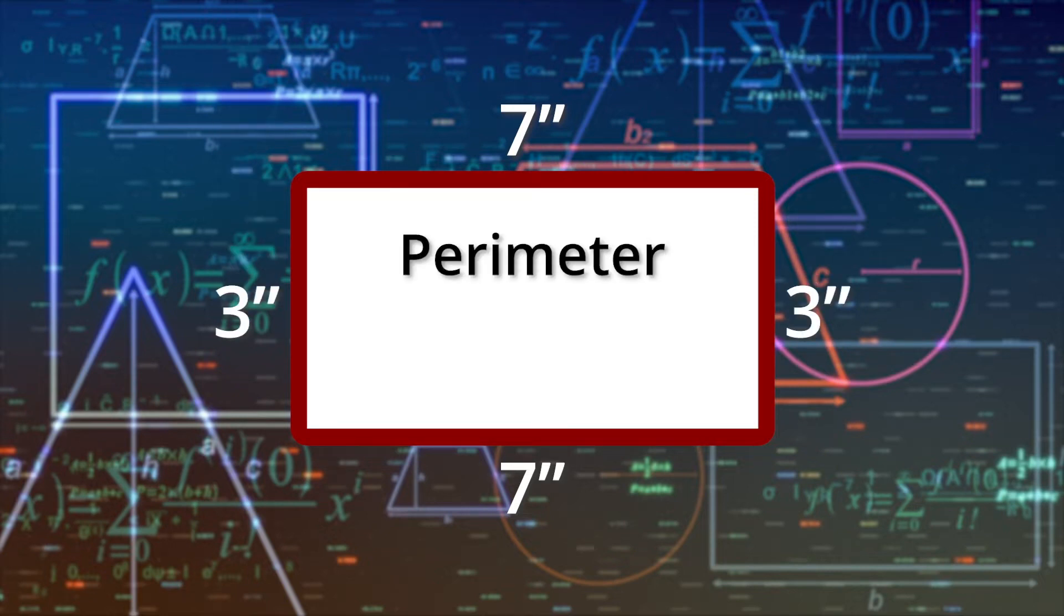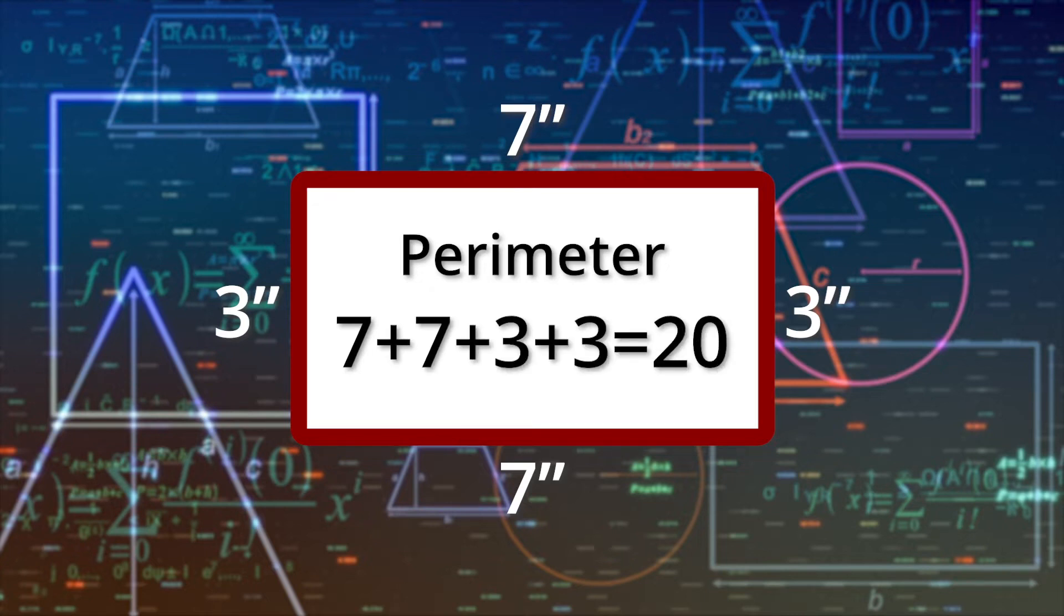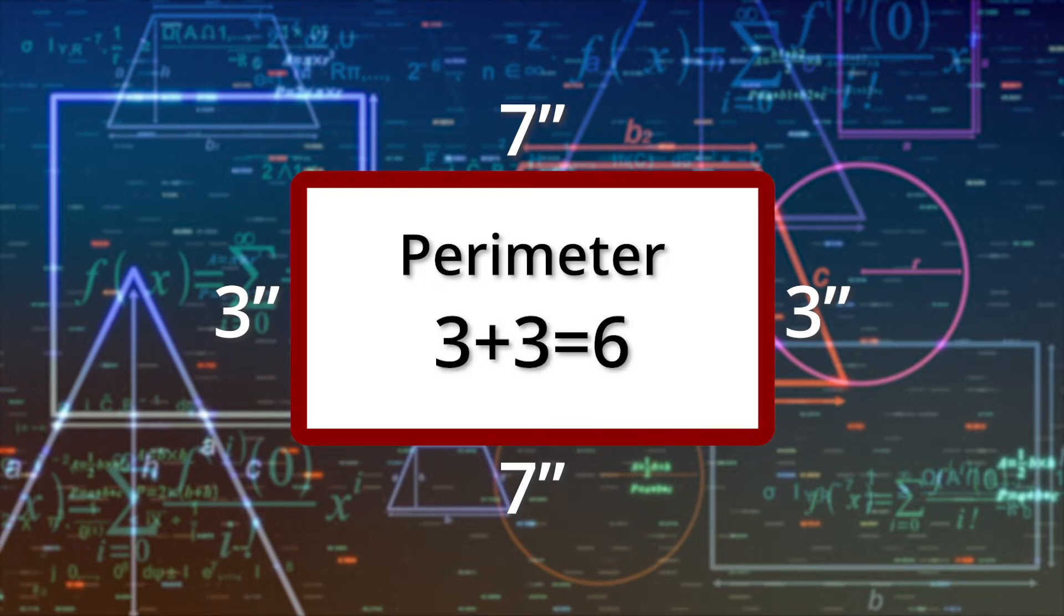To find the perimeter, we add up the two sides of 7 inches and the two sides of 3 inches, which would equal 20 inches. 7 plus 7 equals 14, 3 plus 3 equals 6, 14 plus 6 equals 20.